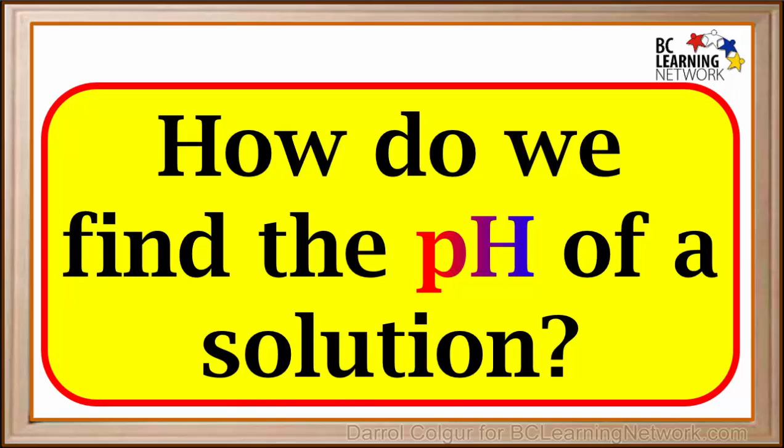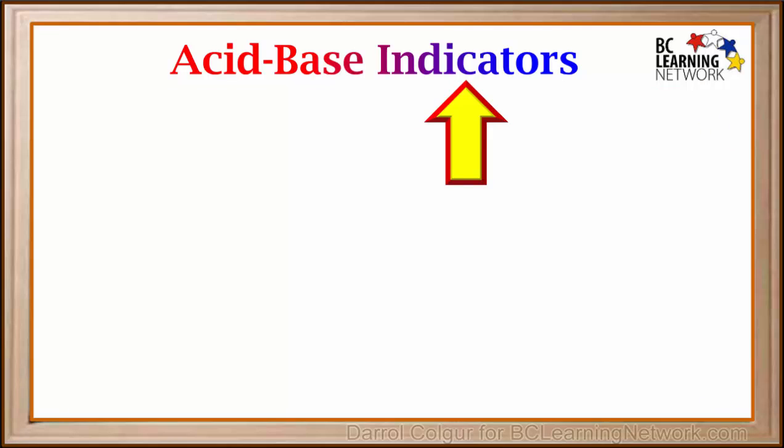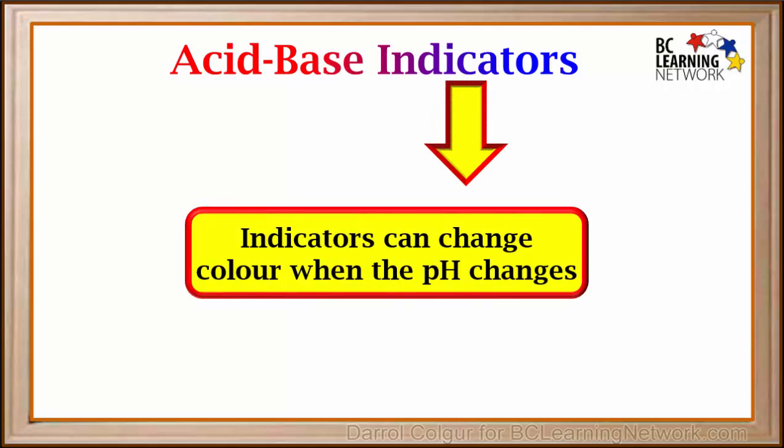A question we might ask is, how do we find the pH of a solution? One way is to use acid-base indicators. Indicators are substances that can change color when the pH changes.